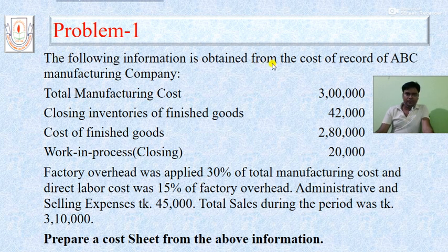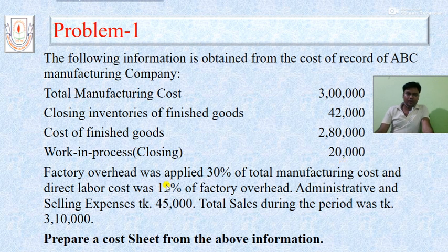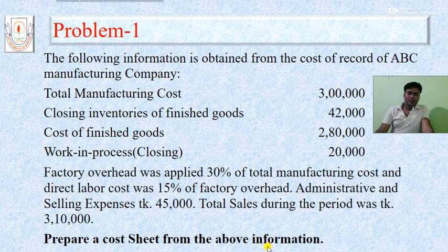The following information is obtained from the cost records of ABC Manufacturing Company. Total manufacturing cost: 3 lakh taka. Closing inventories of finished goods: 42,000 taka. Cost of finished goods: 2 lakh 80,000 taka. Work in process closing: 20,000 taka. Factory overhead was applied at 30% of total manufacturing cost, and direct labor cost was 15% of factory overhead. Administrative and selling expenses: 45,000 taka. Total sales during the period: 3 lakh 10,000 taka.